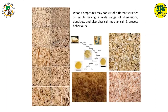Wood composites may consist of different varieties of inputs of different sizes, and the physical, mechanical, and process behaviors differ within the same species as we use different dimensions of wood raw materials such as chips, flakes, long flakes, strands, lumber, and wood flour.